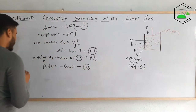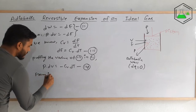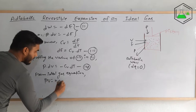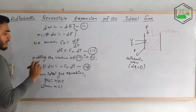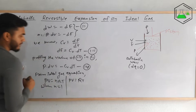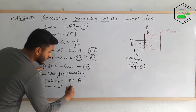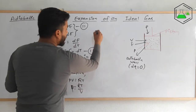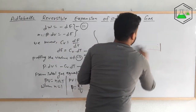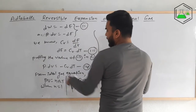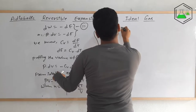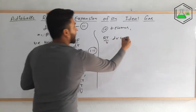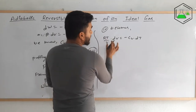Since we are considering an ideal gas, we use the ideal gas equation: pV = nRT. For one mole (n = 1), this becomes pV = RT. Let us replace p from this formula: p = RT/V. Substituting into equation four: (RT/V) dV = −Cv dT.